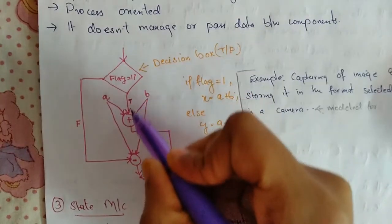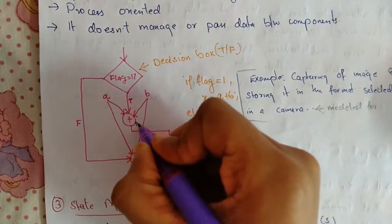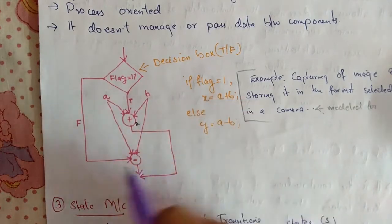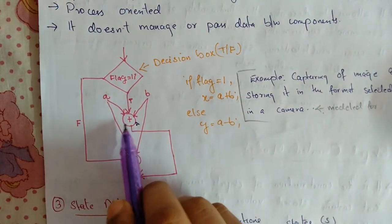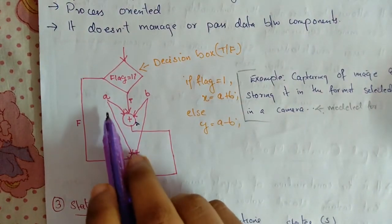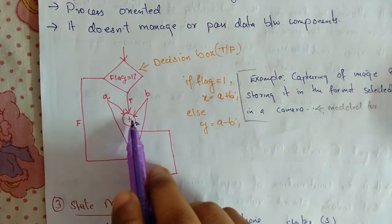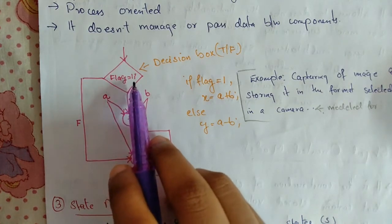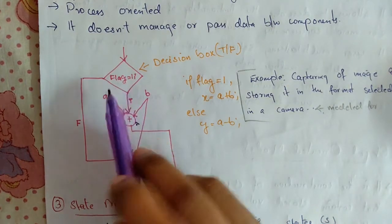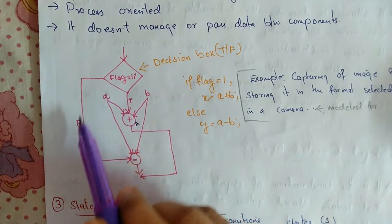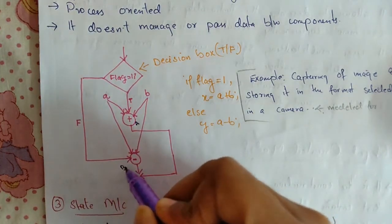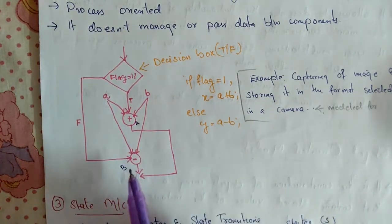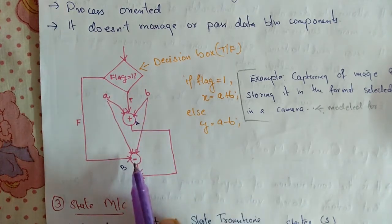If the flag is equal to 1, we go to process A where we have an addition of a and b. If the flag is 0 or not equal to 1, then it goes to process B, where the inputs are a and b, and the output is computed accordingly.